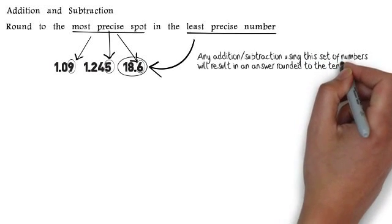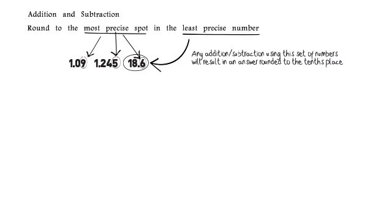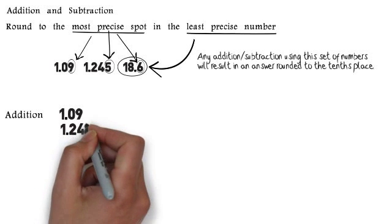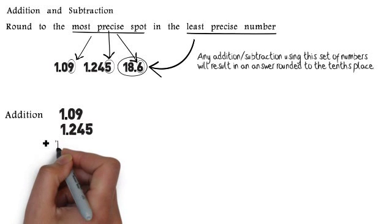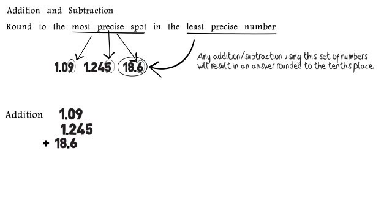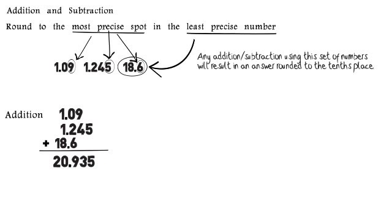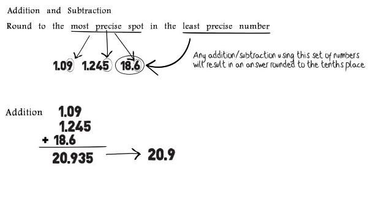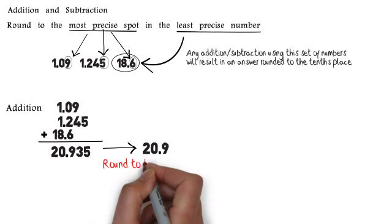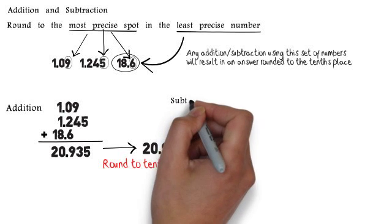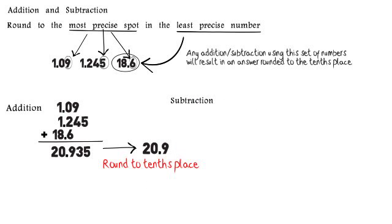Any addition or subtraction using this set of numbers will result in an answer rounded to the tenths place. So when we add 1.09 plus 1.245 plus 18.6, we get 20.935. Rounding that to the tenths place gives us 20.9, which is the correct way to express that answer with significant figures.